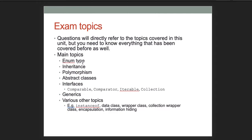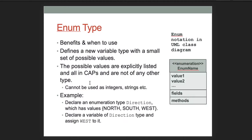Everything we have covered in unit two as well as everything that came before is fair game on this exam, including enumerations, inheritance, polymorphism, abstract classes, and specific interfaces we have gone over — including Comparable, Comparator, Iterable, and Collection — as well as being able to write your own interfaces. We'll also see generics and other related topics like instanceof, wrapper classes, encapsulation, and information hiding.